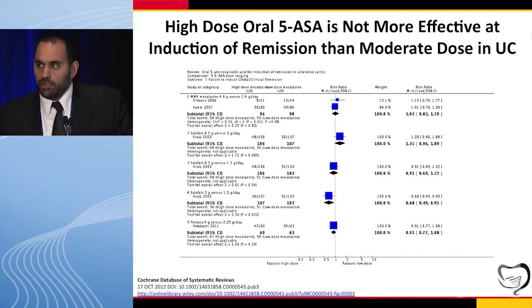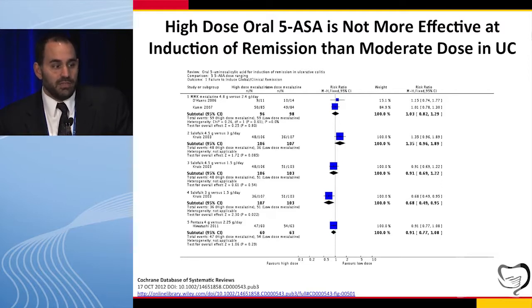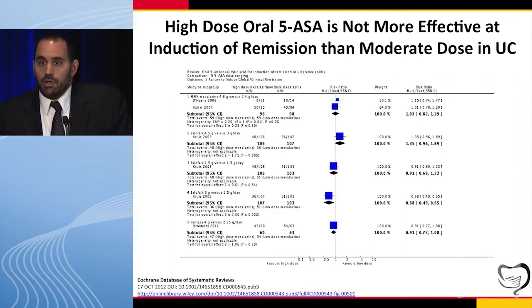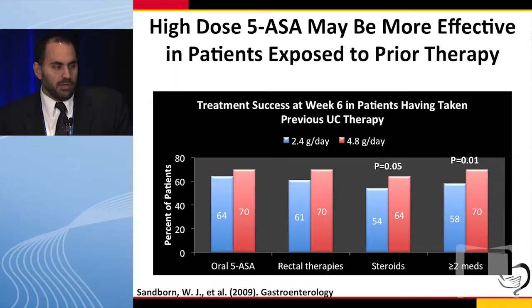Another question is what dose do you start at — low, moderate, or high dose 5-ASA? These studies compare moderate dose to lower or higher dose, and in summary the dose used doesn't really make a difference. The take-home point is that starting patients on a moderate dose, something like 2.4 grams a day of 5-ASA, is very reasonable — higher doses are not superior. That's not to say that if a patient has a partial response at a lower dose you can't escalate their therapy, or that if you know from their history they need a higher dose, you wouldn't use it.